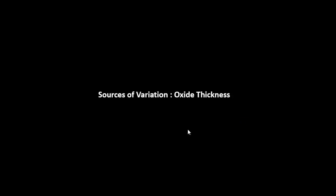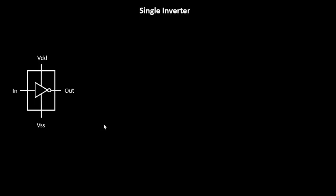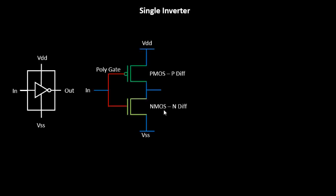Let's continue looking at different sources of variation. The second source of variation is the oxide thickness. We'll begin with an inverter as a good example, which when expanded contains a PMOS and NMOS transistor.